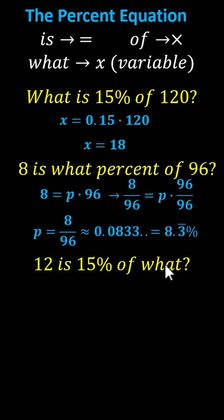Finally, we have: 12 is 15% of what? To write the equation, we have 12, 'is' means equals, 15% is 0.15 as a decimal. For 'of what,' we have times x.